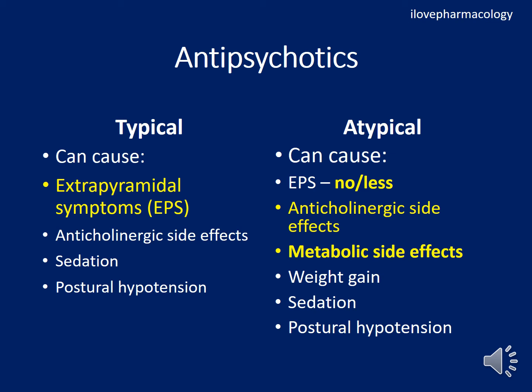Parkinsonism usually appears one to four weeks after starting therapy. It can be overcome by giving central anticholinergics like benzhexol — the drug of choice for drug-induced parkinsonism. Akathisia is an irresistible desire to move about in the absence of anxiety; it is the most common extrapyramidal symptom. Propranolol is the preferred drug for this condition, though central anticholinergics can also be used.